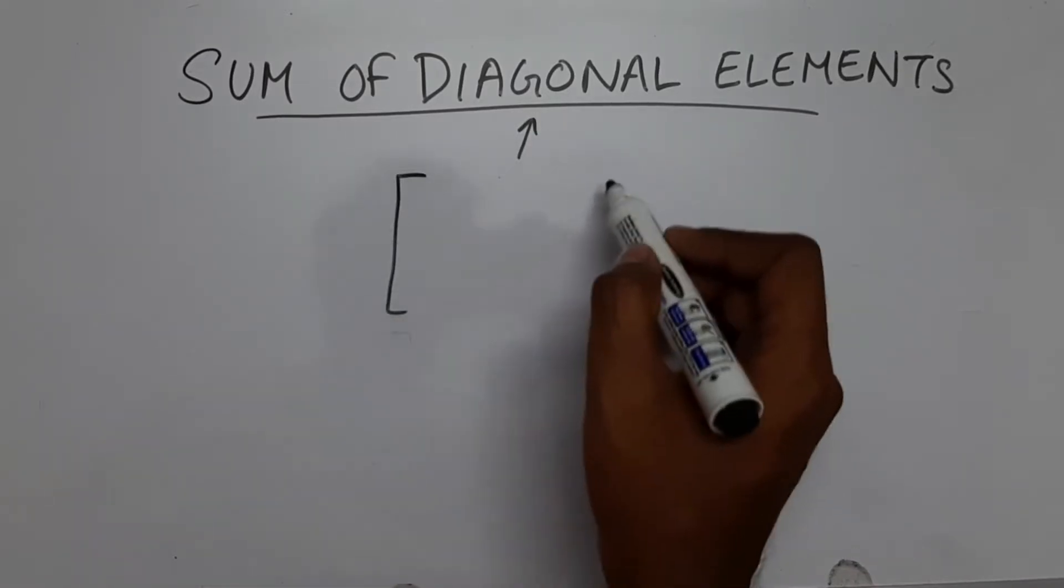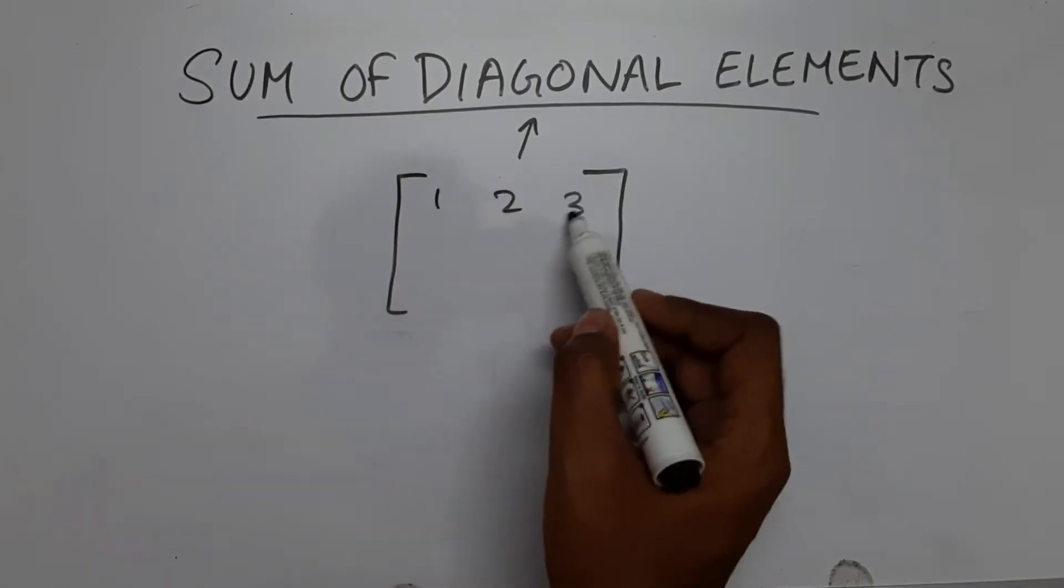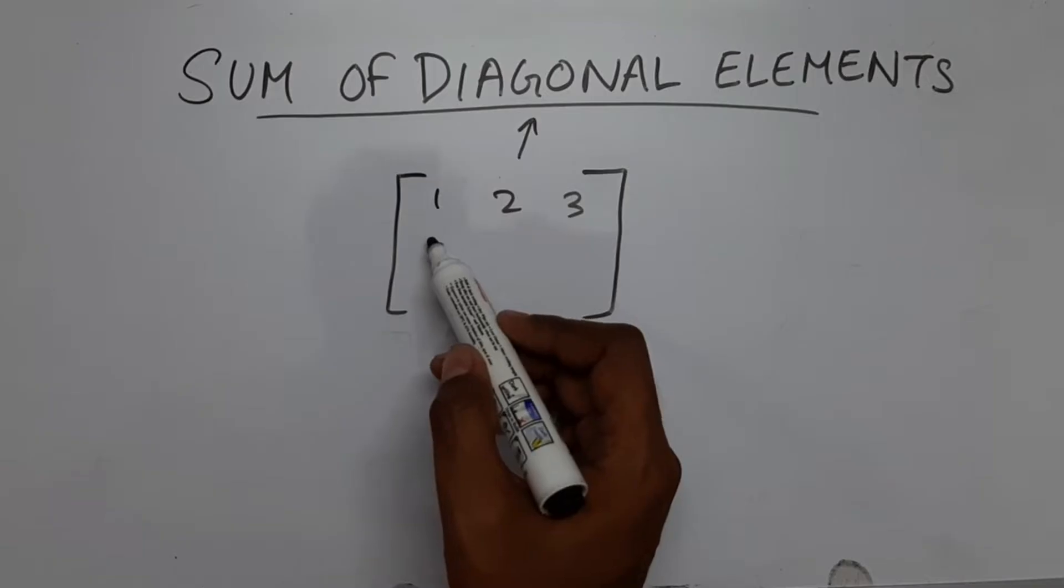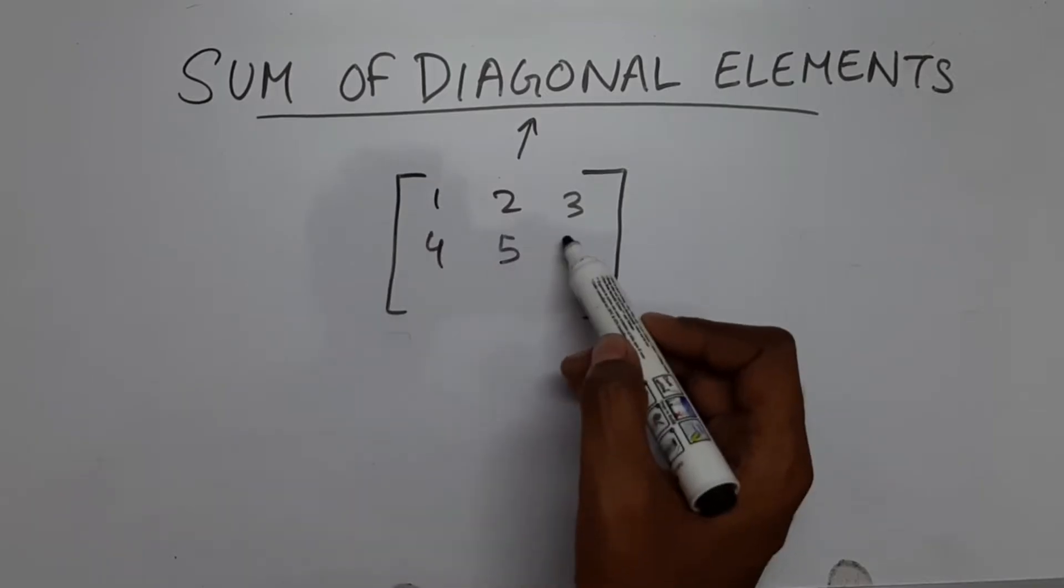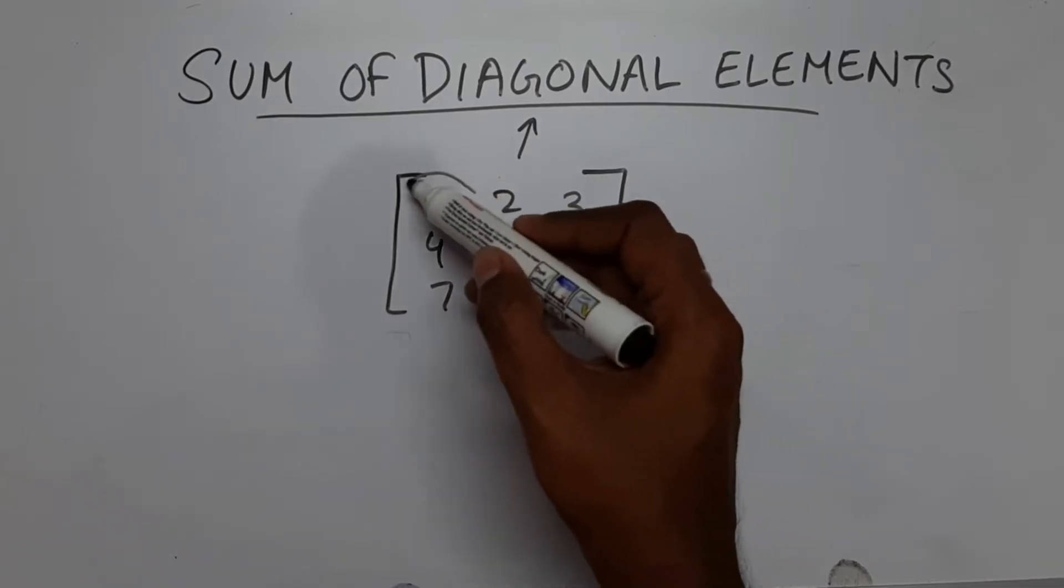So in a 2D array or matrix, let's say this is a 2D array of row and column of size 3. So the main diagonal will be this.